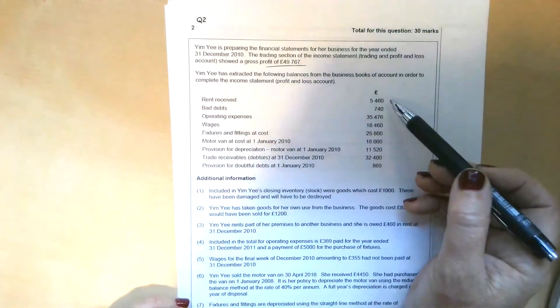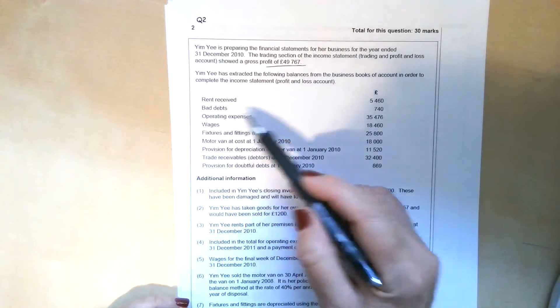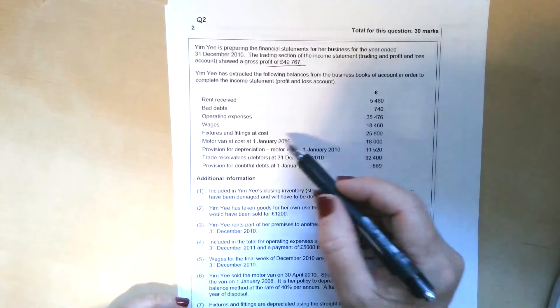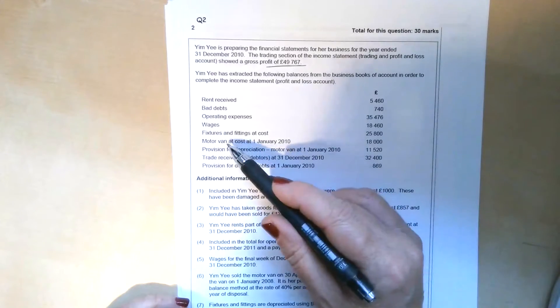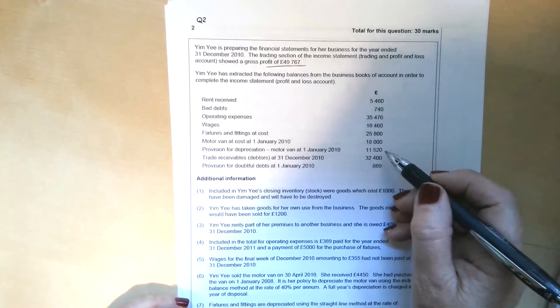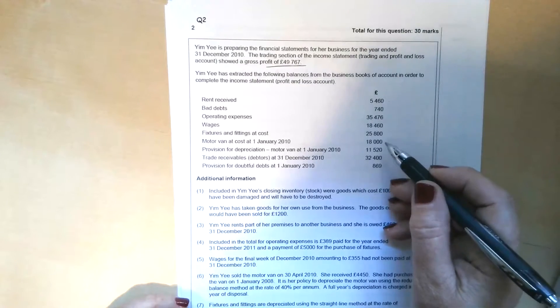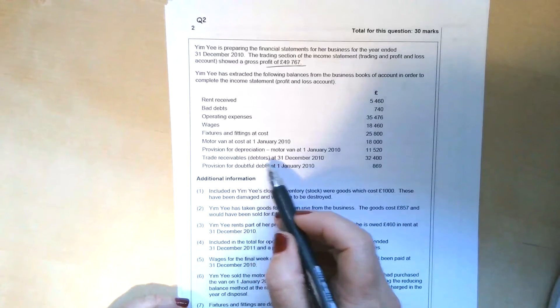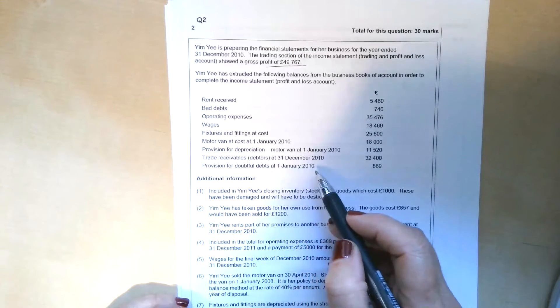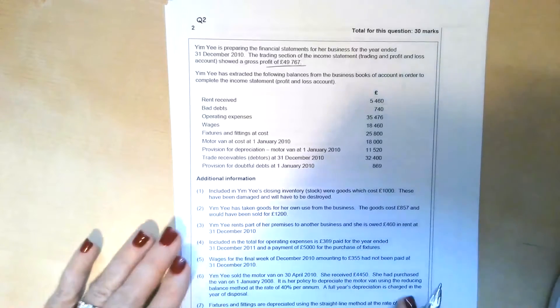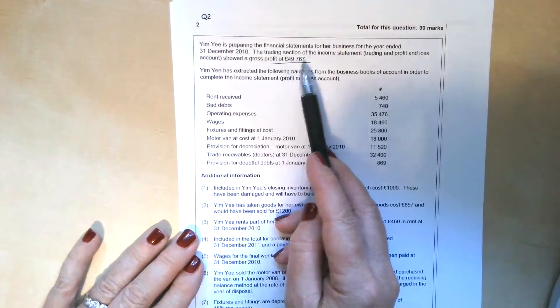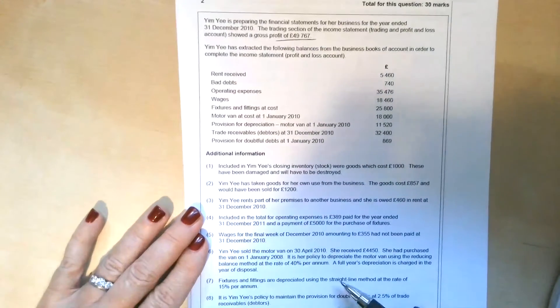We've got some other balances: rent received, so that's going to be other income. We've got bad debts, we now call those irrecoverable debts. We've got operating expenses, wages, fixtures and fittings at cost, so those are non-current assets. We've also got a motor van at cost, more non-current assets, £18,000. And a provision for depreciation brought forward on the motor van of £11,520, so that would suggest to me we might need to do some reducing balance depreciation. We've got trade receivables, used to call debtors, at the year end of £32,400, and a provision for doubtful debts brought forward on the 1st of January 2010 of £869. Those are balances that are going to be useful for us in compiling the income statement.